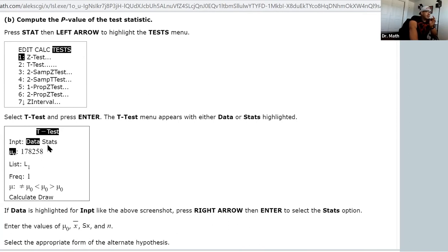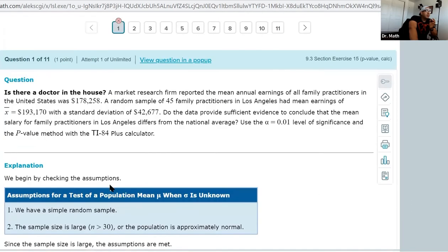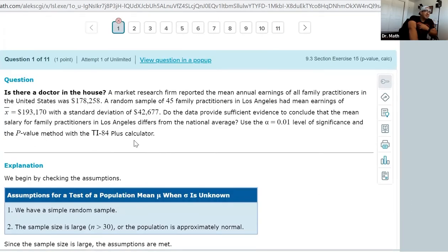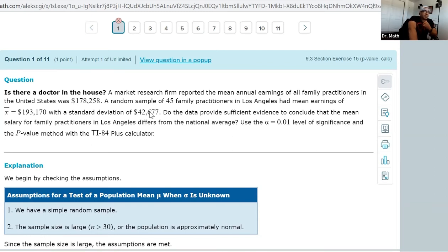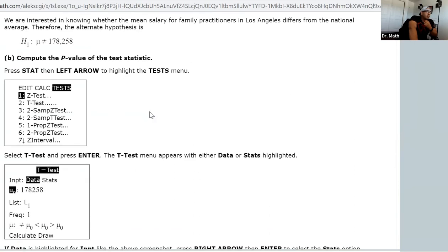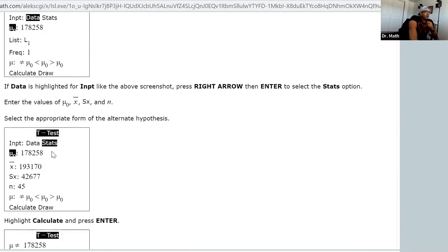This is where I see students making mistakes: Do I use Data or do I use Stats? Well look what they give us. If I scroll up, they give us the statistics - they give us the x-bar, the sample mean, and they give us the standard deviation from that sample. So they're giving us the stats. Make sure you do not highlight Data.